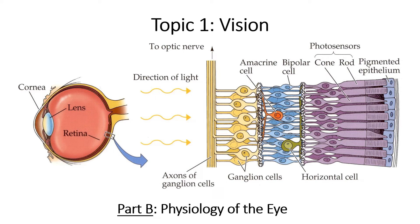In part A of topic one, we looked at the anatomy or structures of the eye. What we're going to do now is look at the physiology — the function of those bits and pieces that make up the eye. We'll talk about how the lens is able to redirect light and focus it onto the retina, and about the photoreceptive cells that receive photons of light and send information to the brain.